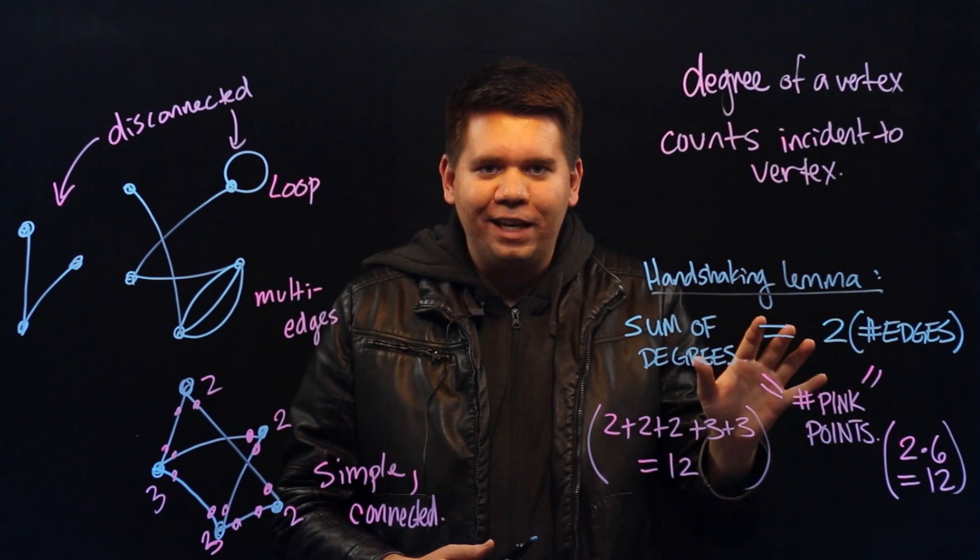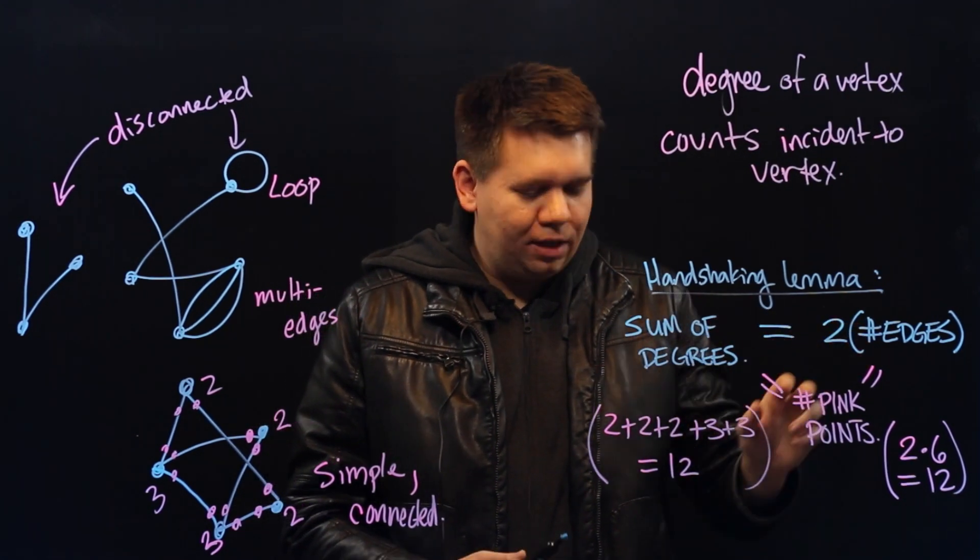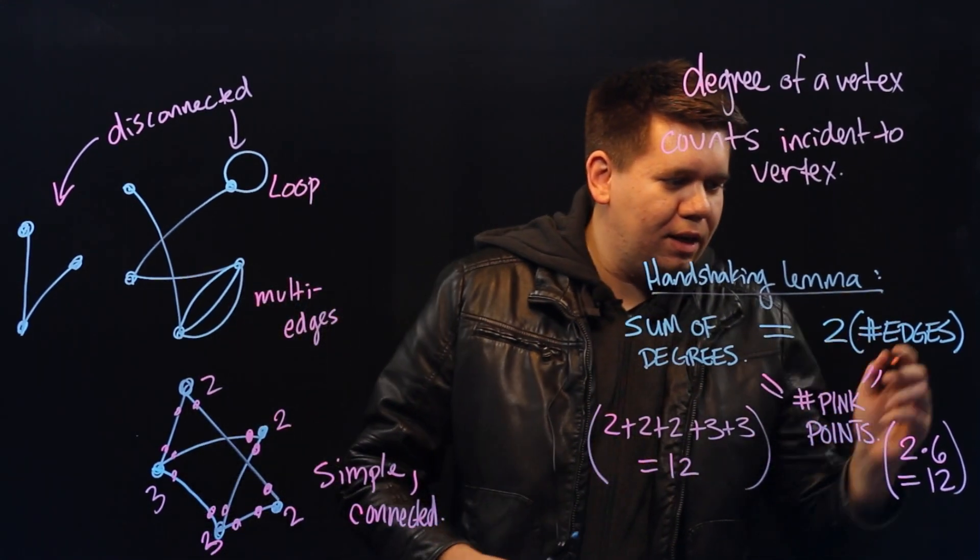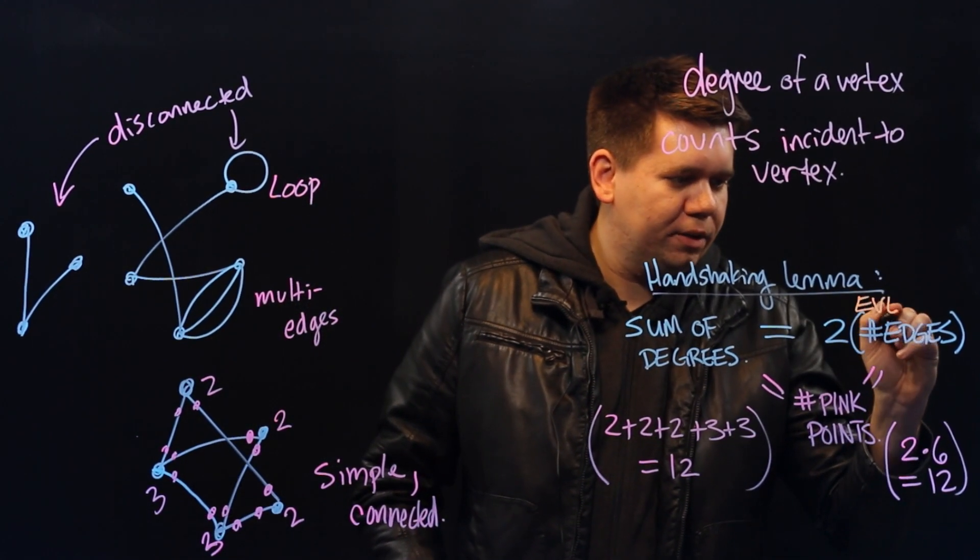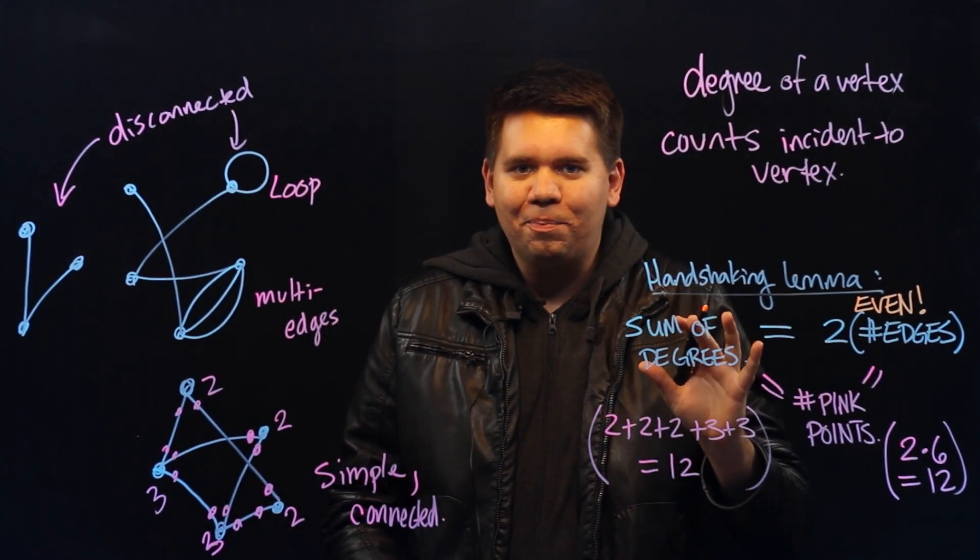And there's an immediate corollary of this fact. Since the sum of the degrees is two times the number of edges, while two times anything must be an even number. So the sum of our degrees must be even.